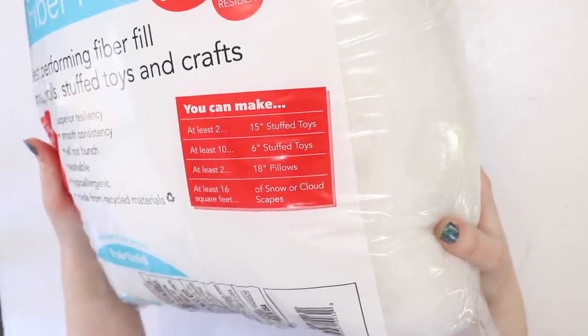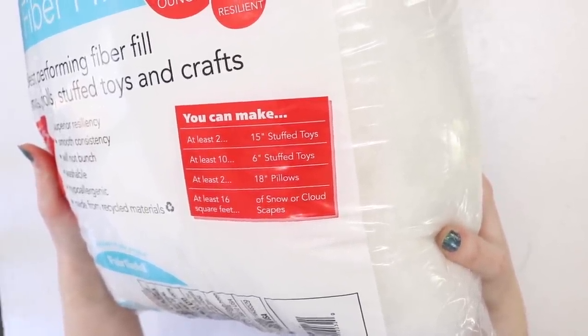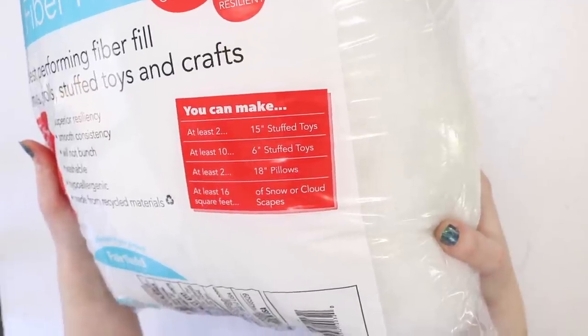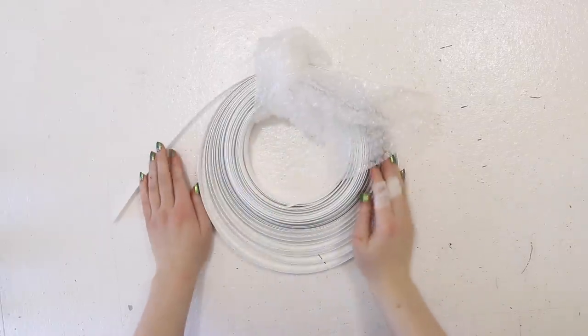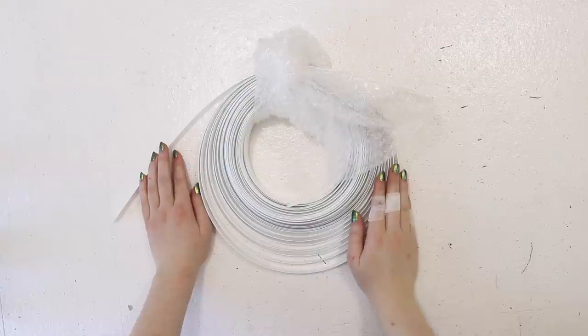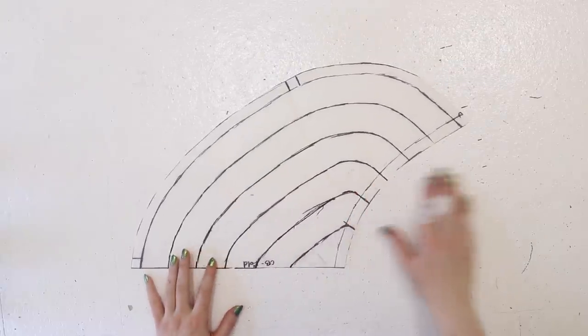This helpfully says how many stuffed toys and pillows you can make from a single bag, but not how many 19th century bum pads, so not very helpful packaging at all, but I figured one bag would be plenty. Lastly, I had hoop steel, and with my materials acquired I drew up a pattern, which looked a bit like this, and got started.